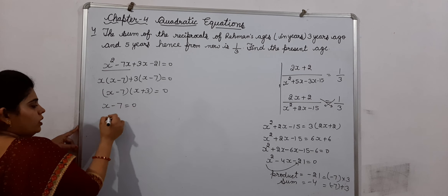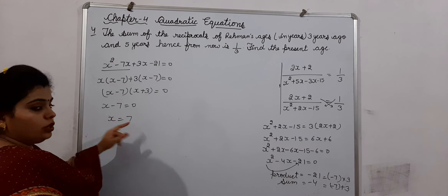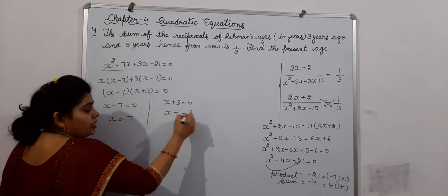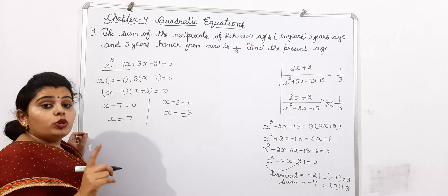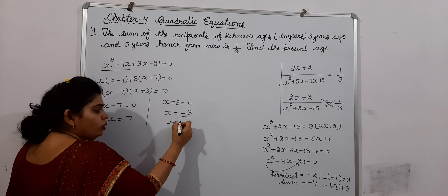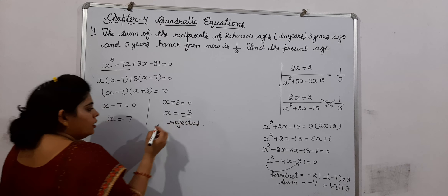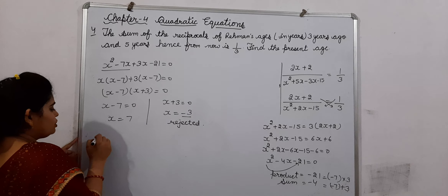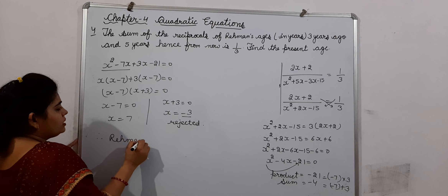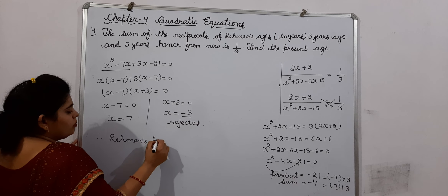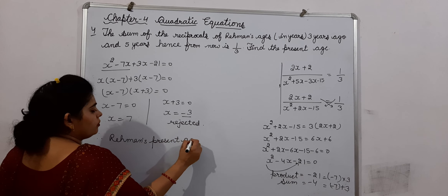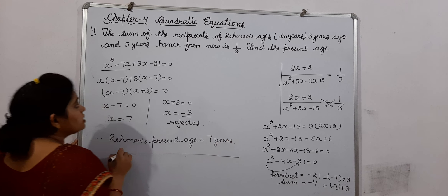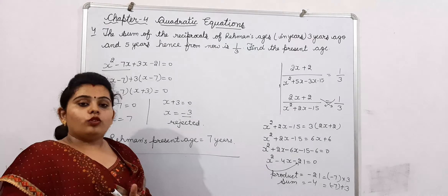From here, either X minus 7 equals 0, giving X equals 7, or X plus 3 equals 0, giving X equals minus 3. Since age cannot be negative, this value is rejected. X is the present age, so Rehman's present age is equal to 7 years. This is question number 4 of exercise 4.3.